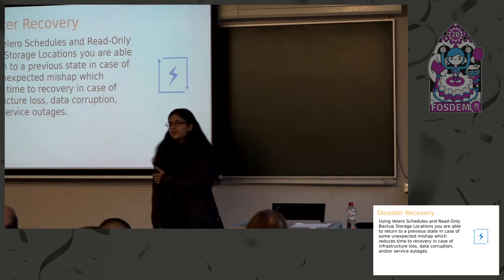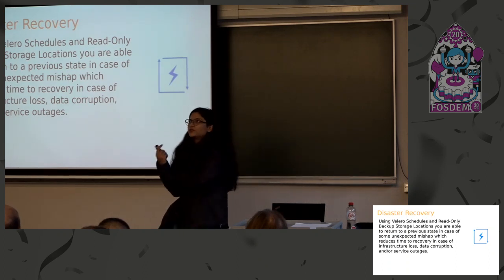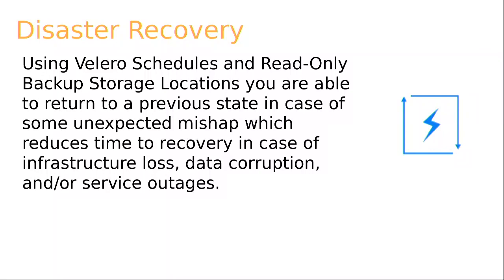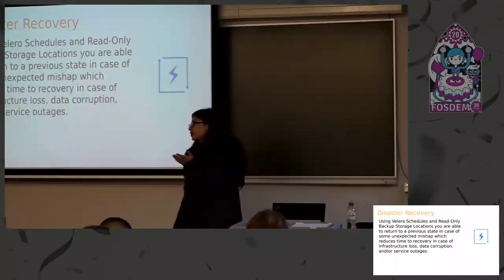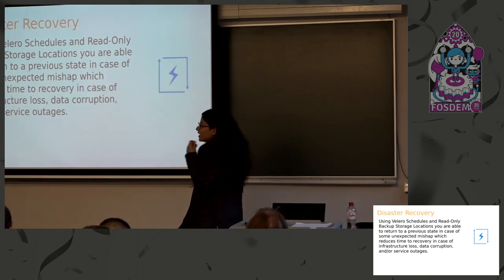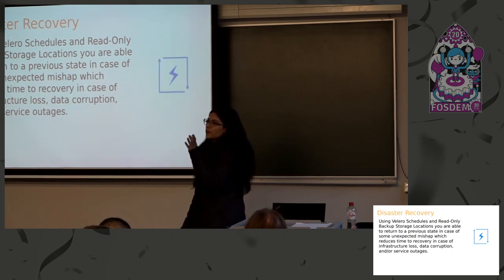Kubernetes is a volatile system, and service outages can happen at any time. A pod or namespace might be accidentally deleted, or a node can go to an unrecoverable state. In that case, what you should do is create a schedule — the interval is your choice, you can create a daily backup schedule. When you create a schedule at recurring intervals, if any disaster happens, you'll already have your backup resources and data at the remote location.